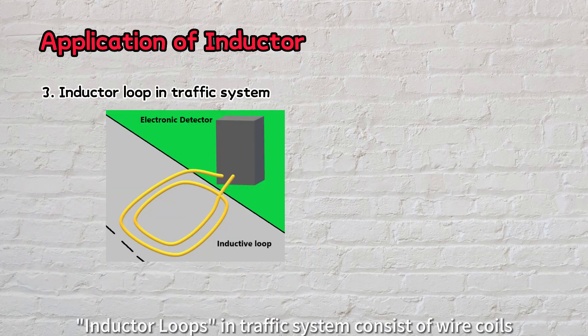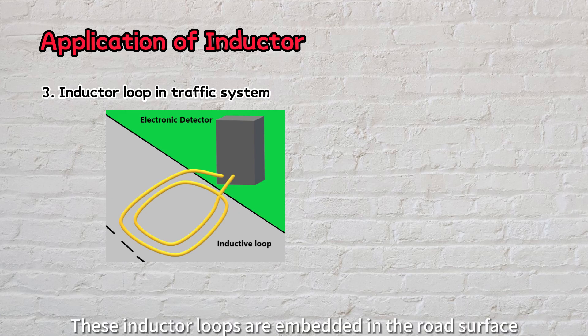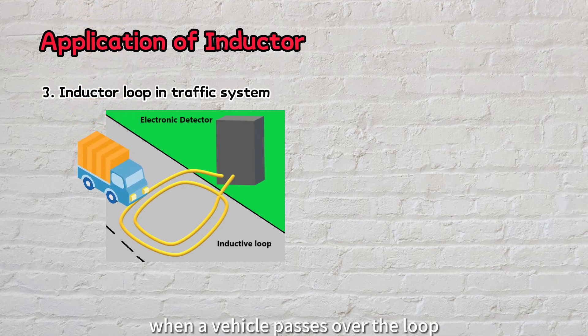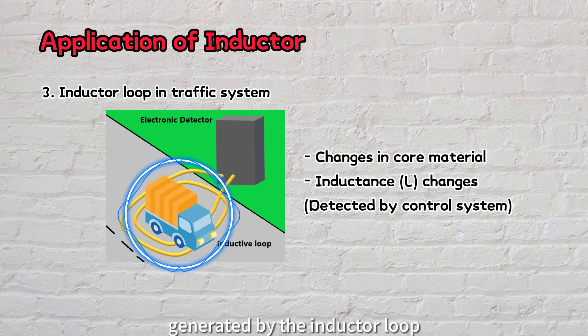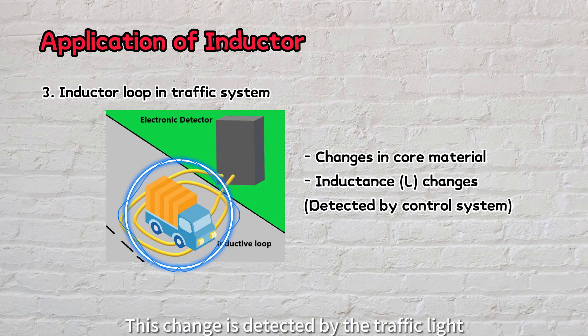Moreover, inductor loops in traffic systems consist of wire coils. These inductor loops are embedded in the road surface to detect the presence of vehicles at intersections. When a vehicle passes over the loop, its metal body interacts with the magnetic field generated by the inductor loop, causing a change in the inductance. This change is detected by the traffic light control system, signaling the presence of a vehicle.